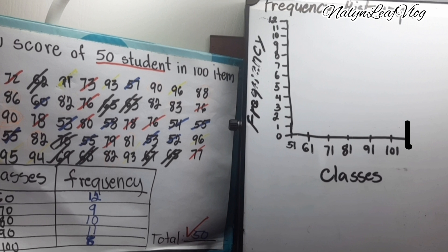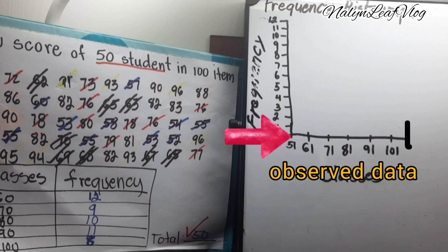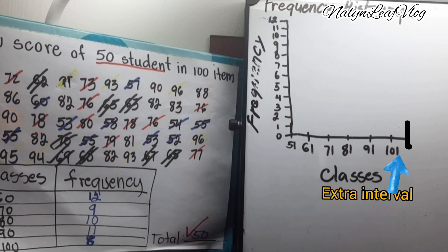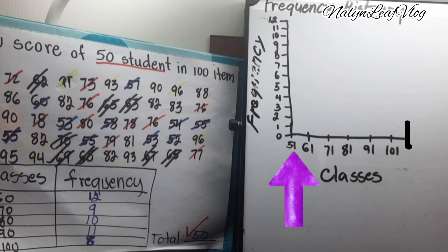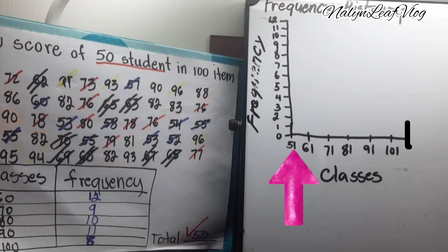The horizontal scale must always include zero and one extra interval at each end. Step five: the vertical axis height should be approximately three-fourths the length of the horizontal axis.